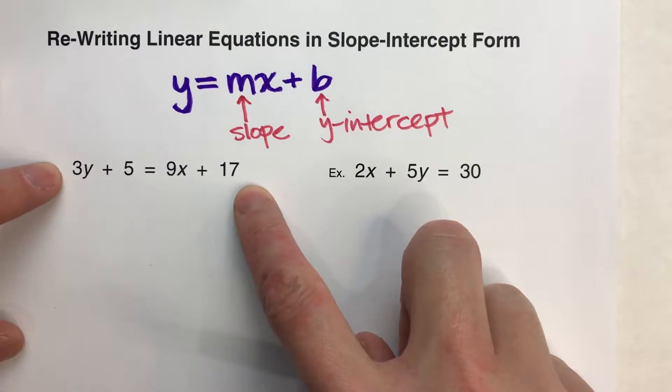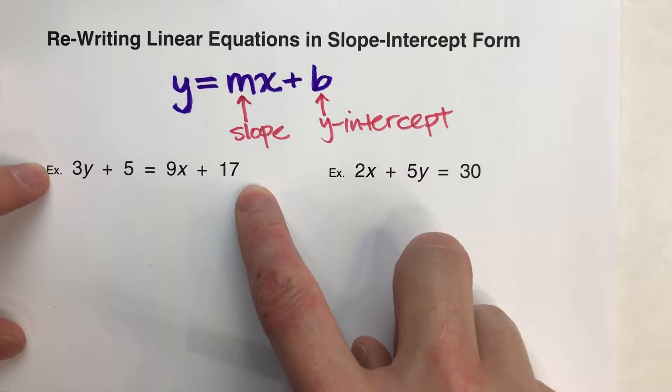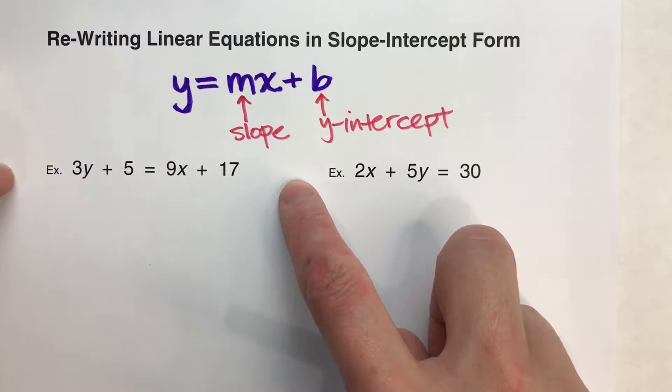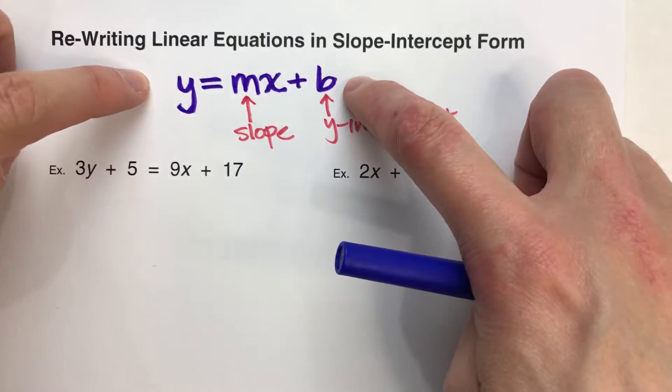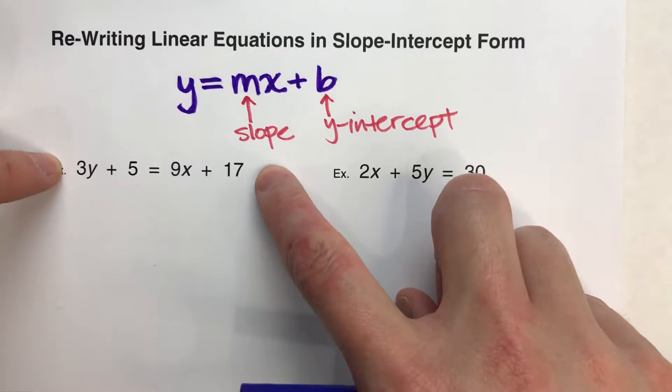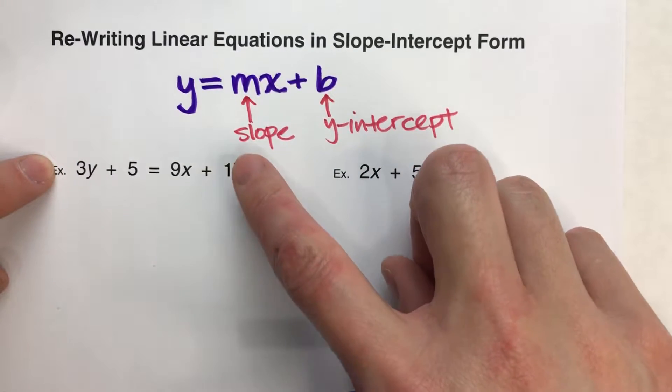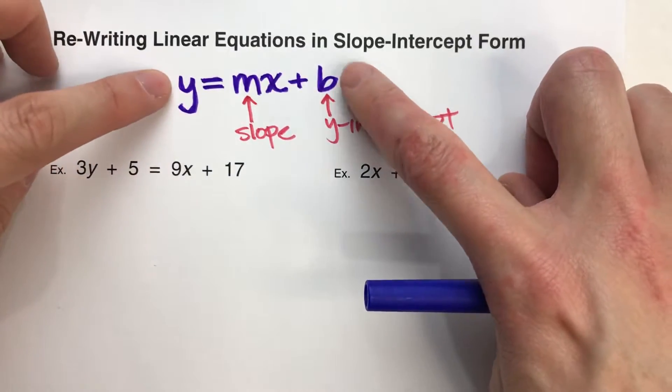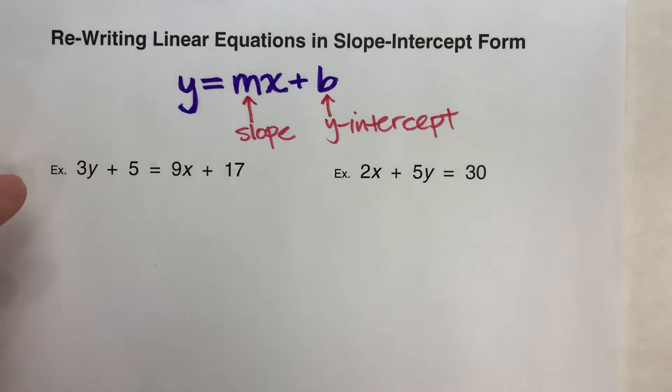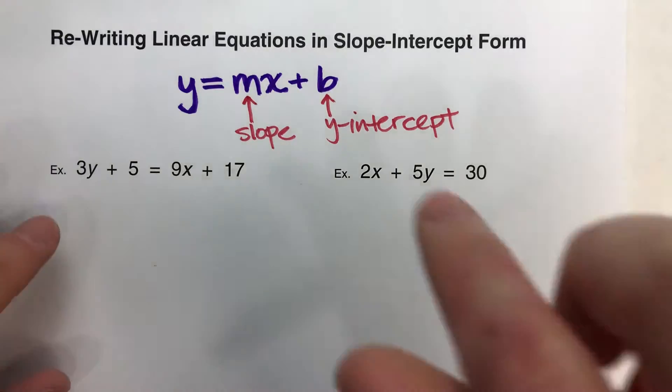This example here, 3y plus 5 equals 9x plus 17, actually is a linear equation, but it doesn't look like one. From looking at it, we can't tell what the slope and y-intercept are, but we can use algebra to rearrange this to put it in slope-intercept form. So, let's do that.